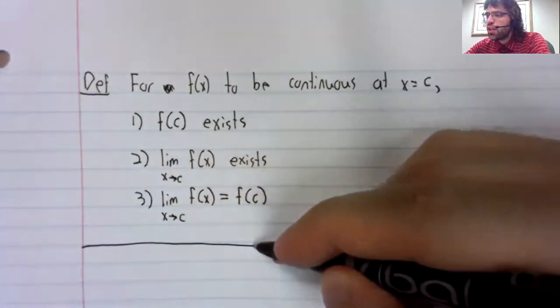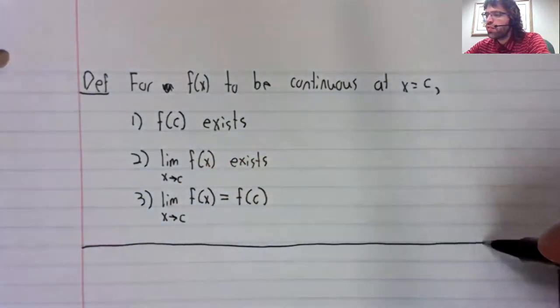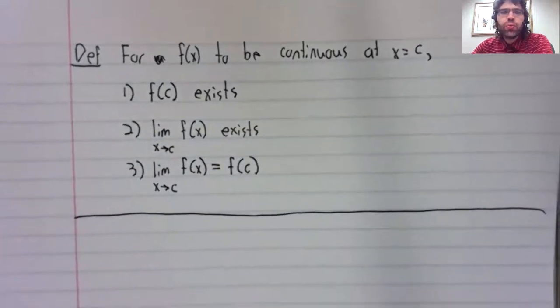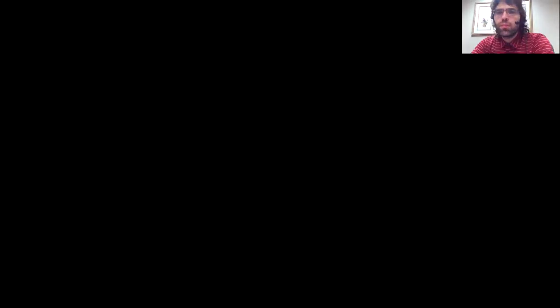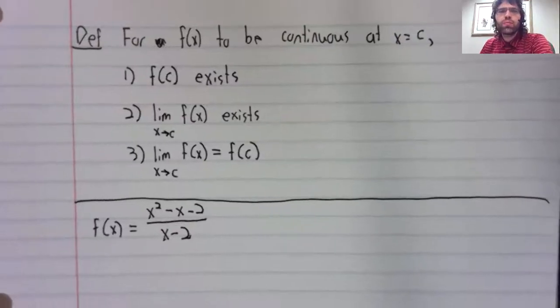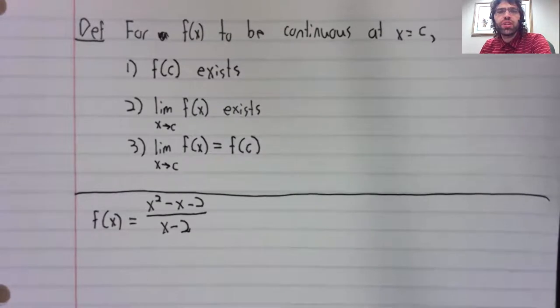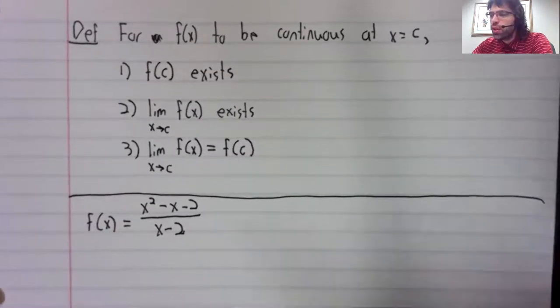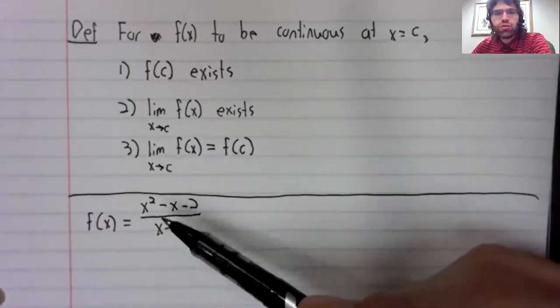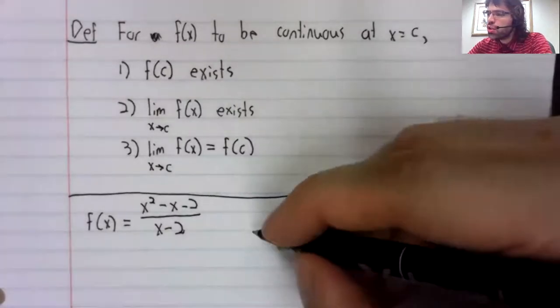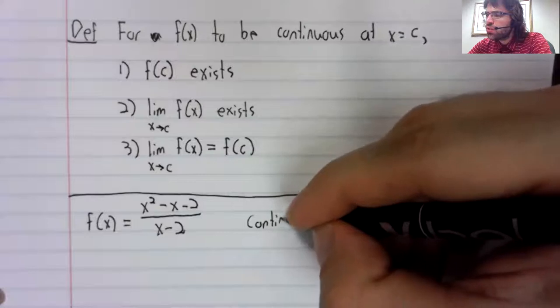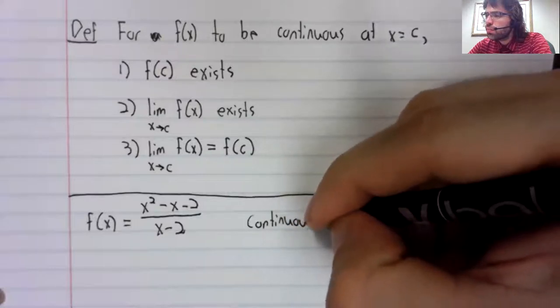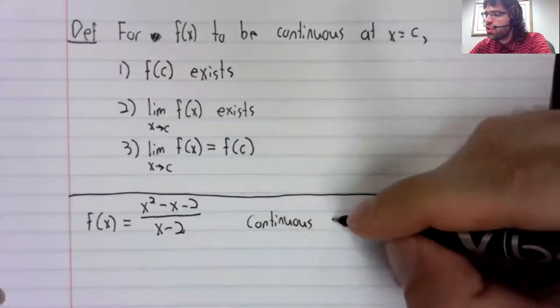Let's try to nail down this definition by doing three related examples. We'll start relatively simple. We'll give you this rational function. And we'll ask, is it continuous?